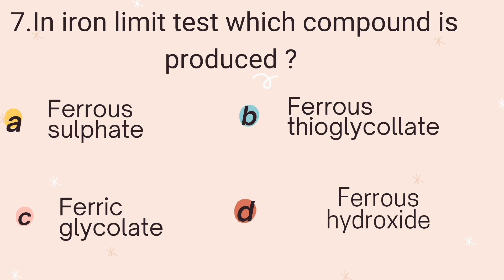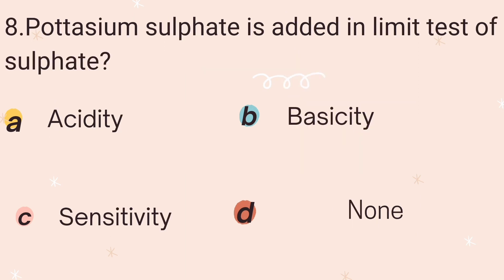Eighth question: Potassium sulfide is added in the limit test of sulfide. The reagents used include barium sulfide, potassium sulfide, and sulfide-free alcohol. Potassium sulfide is added to increase the sensitivity of the test. Therefore, Option C — sensitivity — is the correct answer.